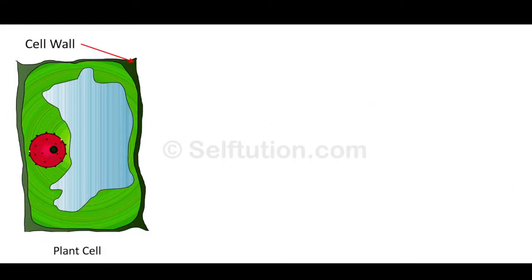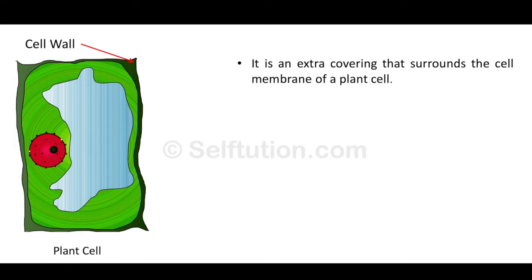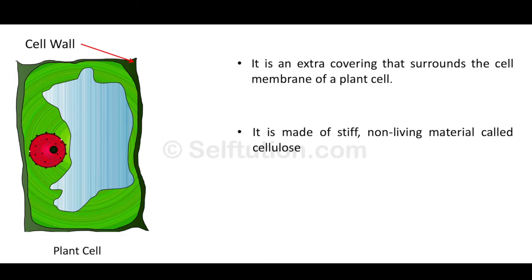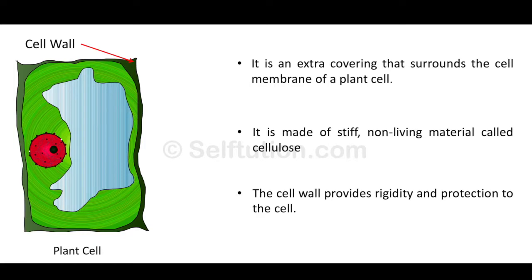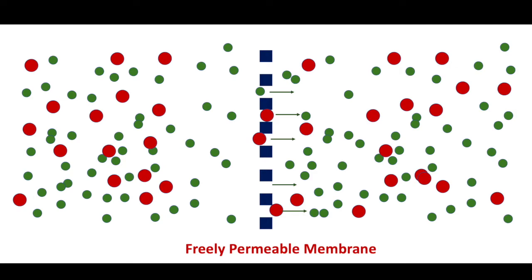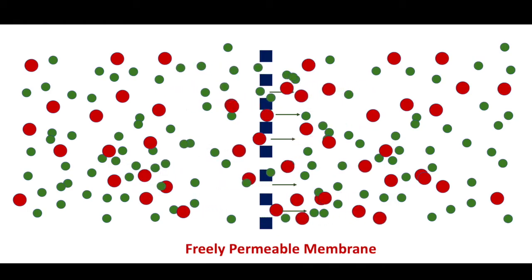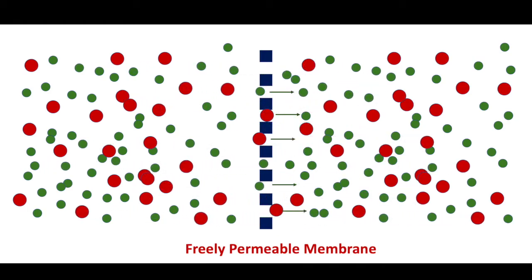People often get confused between cell membrane and cell wall. Please note: the cell wall is only present in plant cells. It is an extra covering that surrounds the cell membrane of a plant cell. It is made up of a stiff, non-living material called cellulose. The cell wall provides rigidity and protection to the cell. Unlike the cell membrane, it is freely permeable and allows all substances in solution form to pass through it. Animal cells do not have a cell wall.